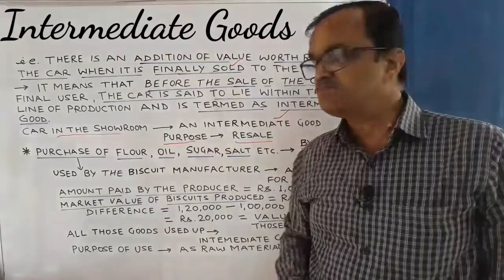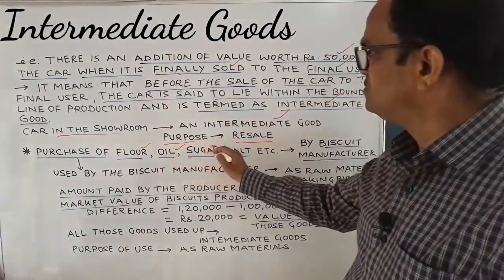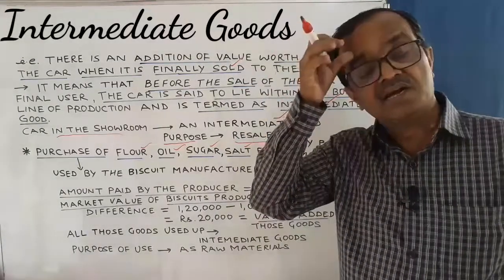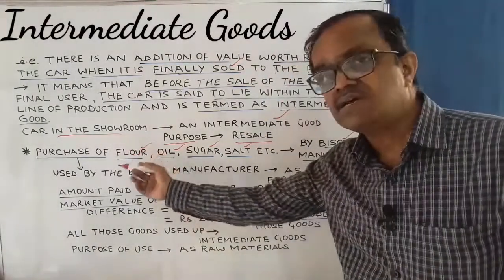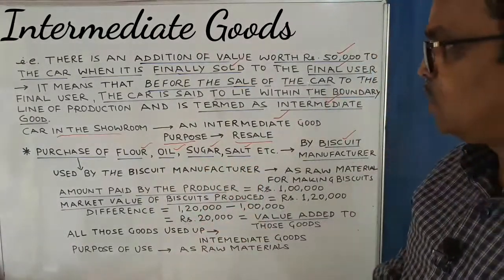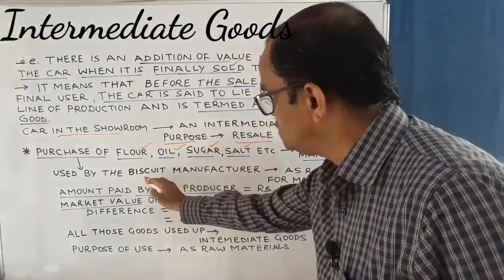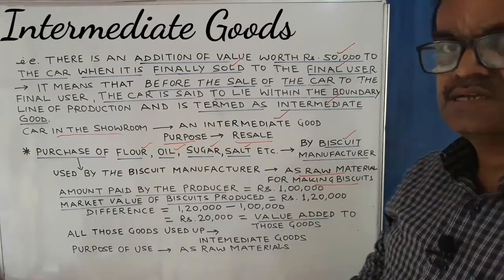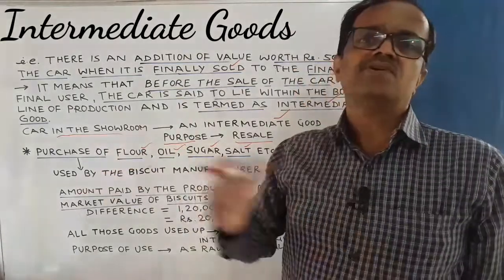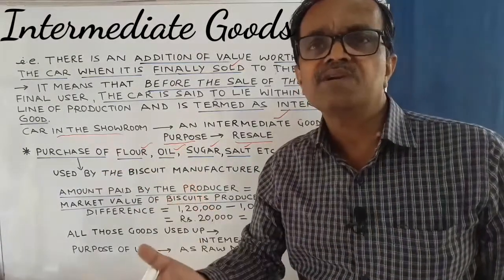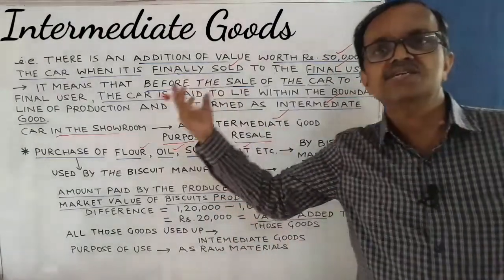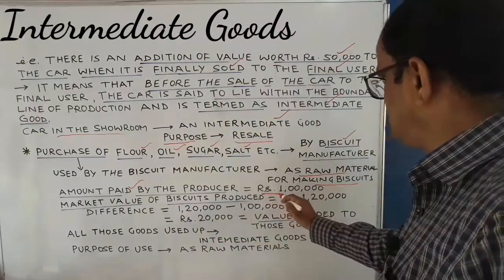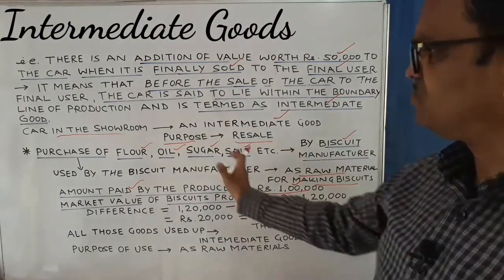Let us take another example. Purchase of flour, oil, sugar, salt, etc. by the biscuit manufacturer. A biscuit producer purchases these goods — maida, oil, sugar, salt. All these goods are used by the manufacturer as raw materials for making biscuits. These are purchased not for consumption but for complete transformation into a new product — that is, used as raw materials. Let the amount paid by the biscuit manufacturer be 1 lakh rupees for all those goods.